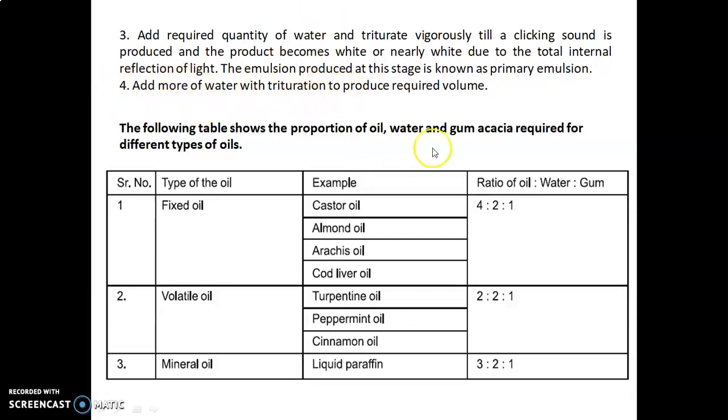Add more water with trituration to produce required volume. The following table shows the proportion of oil, water, and gum acacia required for different types of oils. For fixed oil (castor oil, almond oil, arachis oil, cod liver oil), the ratio of oil to water to gum is 4:2:1. For volatile oil (turpentine oil, peppermint oil, cinnamon oil), ratio is 2:2:1. For mineral oil (liquid paraffin), ratio is 3:2:1.